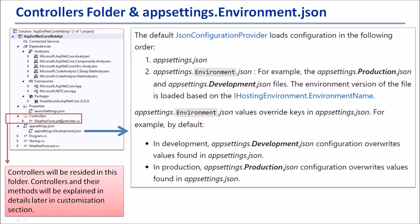The next item is the Controllers folder. By default, there is only one WeatherForecast controller. Of course, later we will add our customized controllers. The next item is app settings. The default JSON configuration provider loads configuration in the following order: first, appsettings.json; second, appsettings.{Environment}.json — for example, appsettings.Production.json and appsettings.Development.json files.